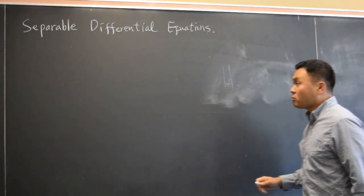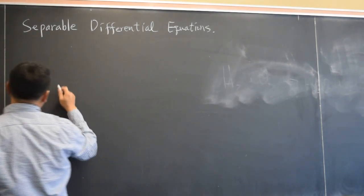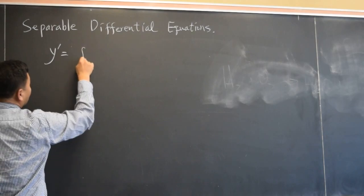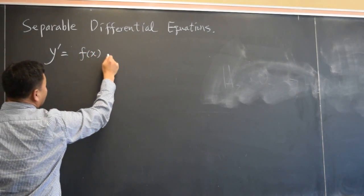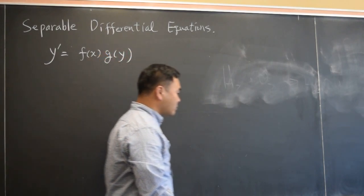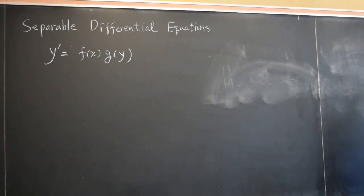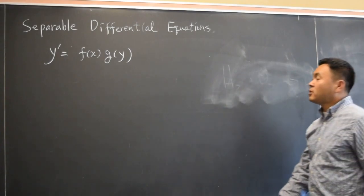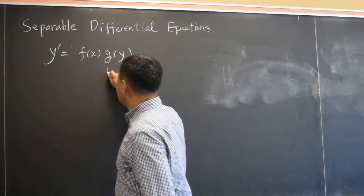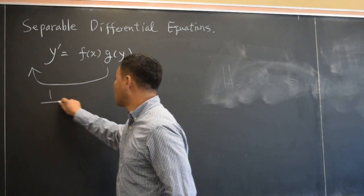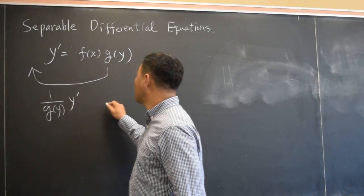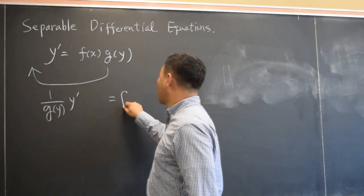These are differential equations of the following form: y prime equals a function of x times another function of y. And the way you solve this is by dividing g of y to the other side. So you have g of y times y prime equals f of x.